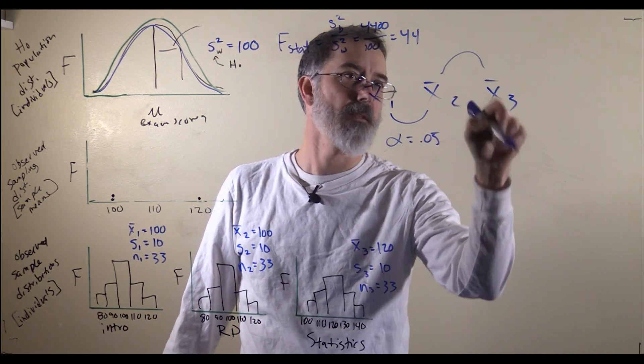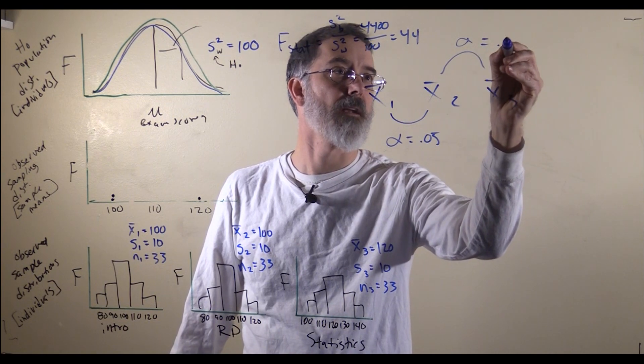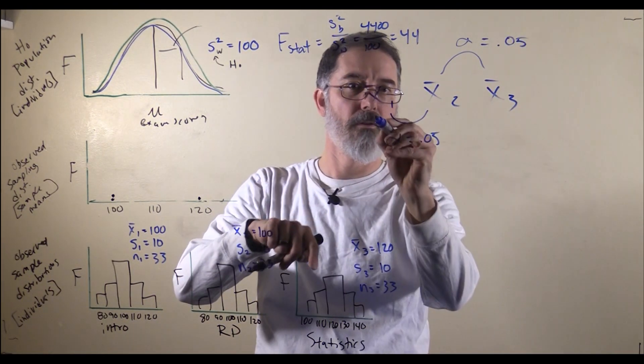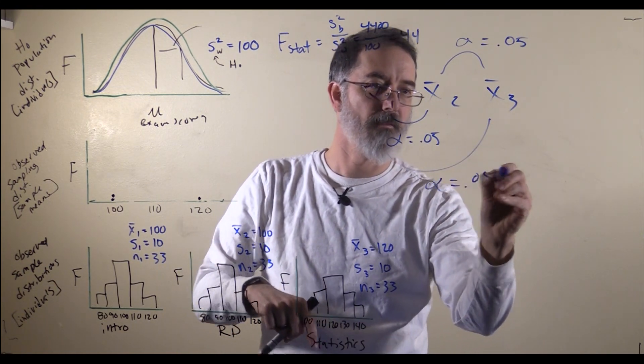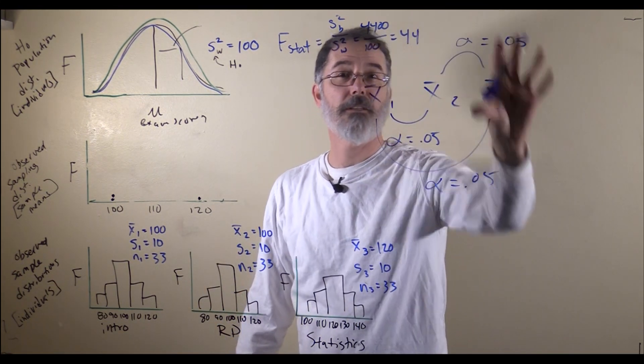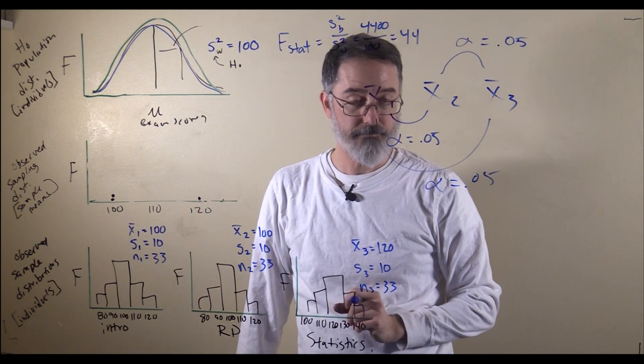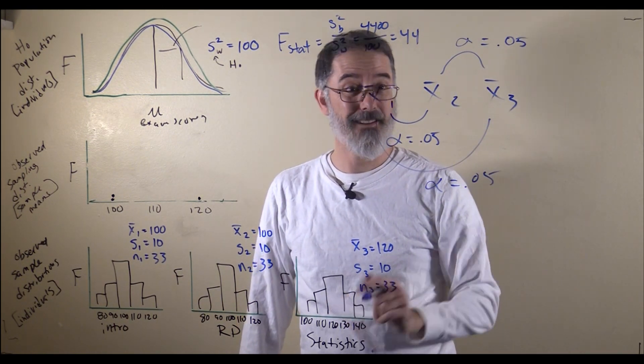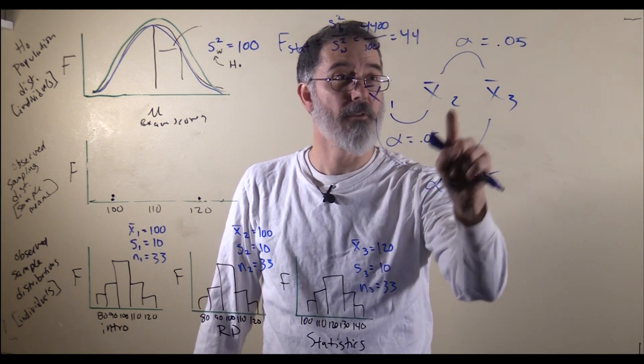And then if we do a comparison of these two, that would have a different alpha equal to .05. We would have to compare 1 and 2, 2 and 3, and then also 1 and 3. We would have to do three statistical tests instead of one. If we do three statistical tests instead of one, then our alpha is not going to be .05 anymore.